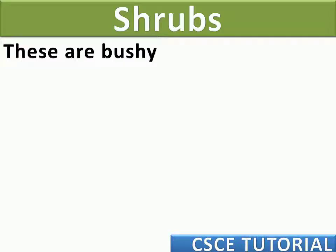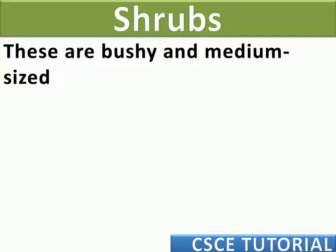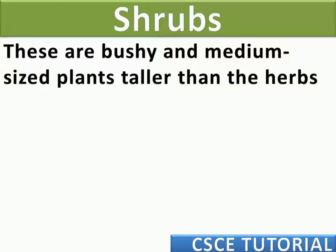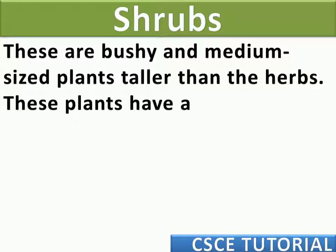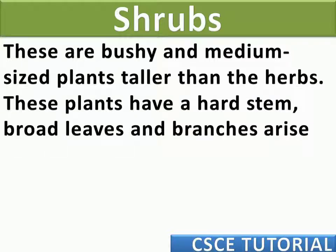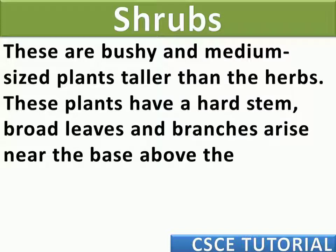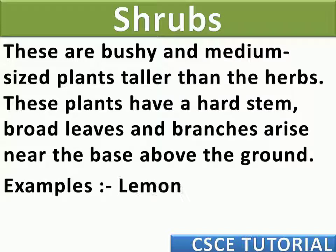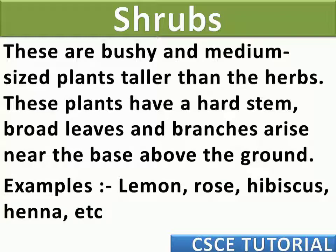Shrubs: these are bushy and medium-sized plants, taller than herbs. These plants have a hard stem, broad leaves, and branches that arise near the base above the ground. Examples: lemon, rose, hibiscus, henna, etc.